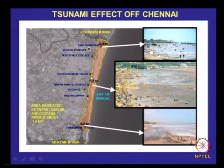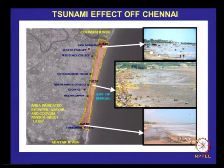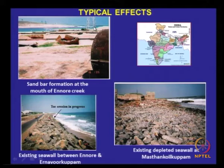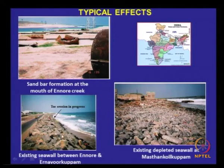This map, I believe, has been done by Anna University or one of the institutes involved in GIS and remote sensing. One good thing that happened was the opening of the river mouths — which is always a perennial problem of sandbar formation. During the tsunami that was the only plus point: the sandbar was removed. The toe erosion was one serious problem that took place during the ingress of the tsunami.